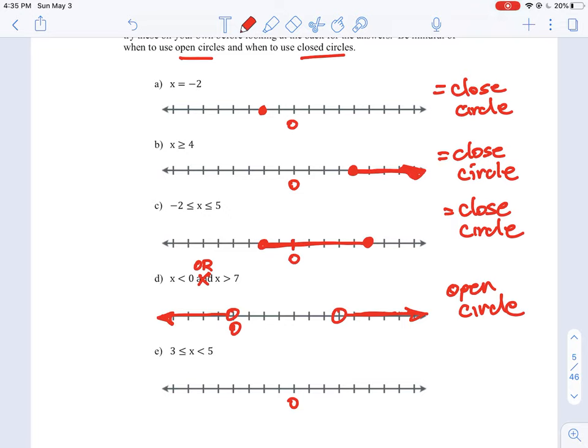So question E I'm going to leave for you. It says x is less than 5 and greater than or equal to 3. So that should tell you a couple of things. Do I have open circles? Do I have closed circles? Is it open on one number, closed on the other number? And it's also set up as an 'and' statement, meaning both conditions have to be true at the same time. So see if you can graph that one. The answer is available for you at the back of the sheet.